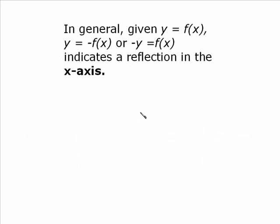And here's the rule with it. In general, given y equal f(x), so any function, doesn't matter, the two we looked at or any other ones, y equal negative f(x), the negative in front of the function, or negative y equal f(x) indicates a reflection in the x-axis. So the second way I wrote it, negative y equal f(x), is an acceptable correct way to write it. And it also suggests a really important idea, that you are replacing y with negative y in the equation. And that's how you do determine a reflection in the x-axis. Y gets replaced with negative y.